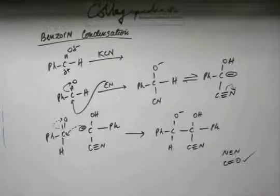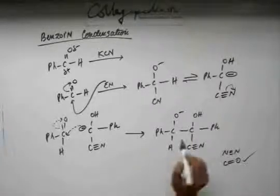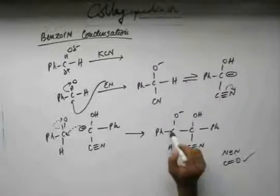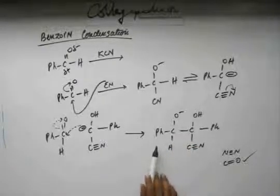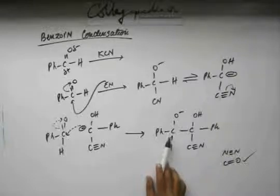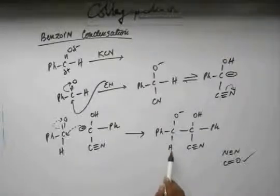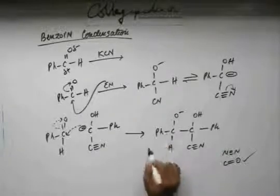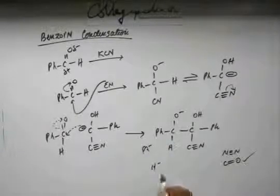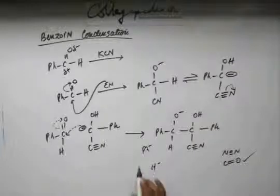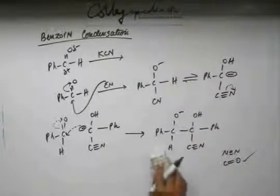If we can generate C=O, that will bring about stability. In order to generate C=O, oxygen has to give its electrons to carbon, and carbon has to become electron deficient. Electron deficiency can come in carbon if it breaks a bond. If this carbon breaks its bond, H⁻ will come out — that is not a stable thing. If you break this bond, Ph⁻ will come out. These are not good leaving groups.